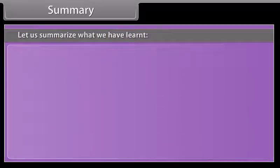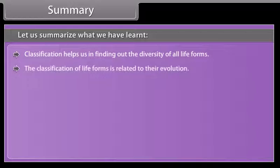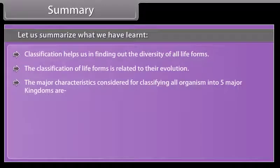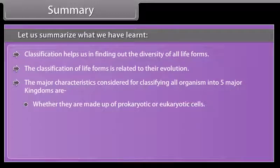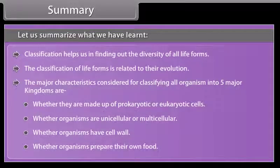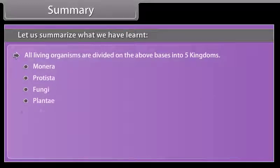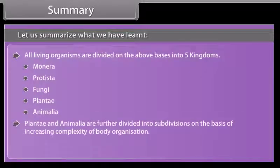Summary: Classification helps us in finding out the diversity of all life forms. The classification of life forms is related to their evolution. The major characteristics considered for classifying all organisms into five major kingdoms are whether they are made up of prokaryotic or eukaryotic cells, whether organisms are unicellular or multicellular, whether organisms have a cell wall, and whether organisms prepare their own food. All living organisms are divided into five kingdoms: Monera, Protista, Fungi, Plantae, and Animalia. Plantae and Animalia are further divided into sub-divisions on the basis of increasing complexity of body organization.